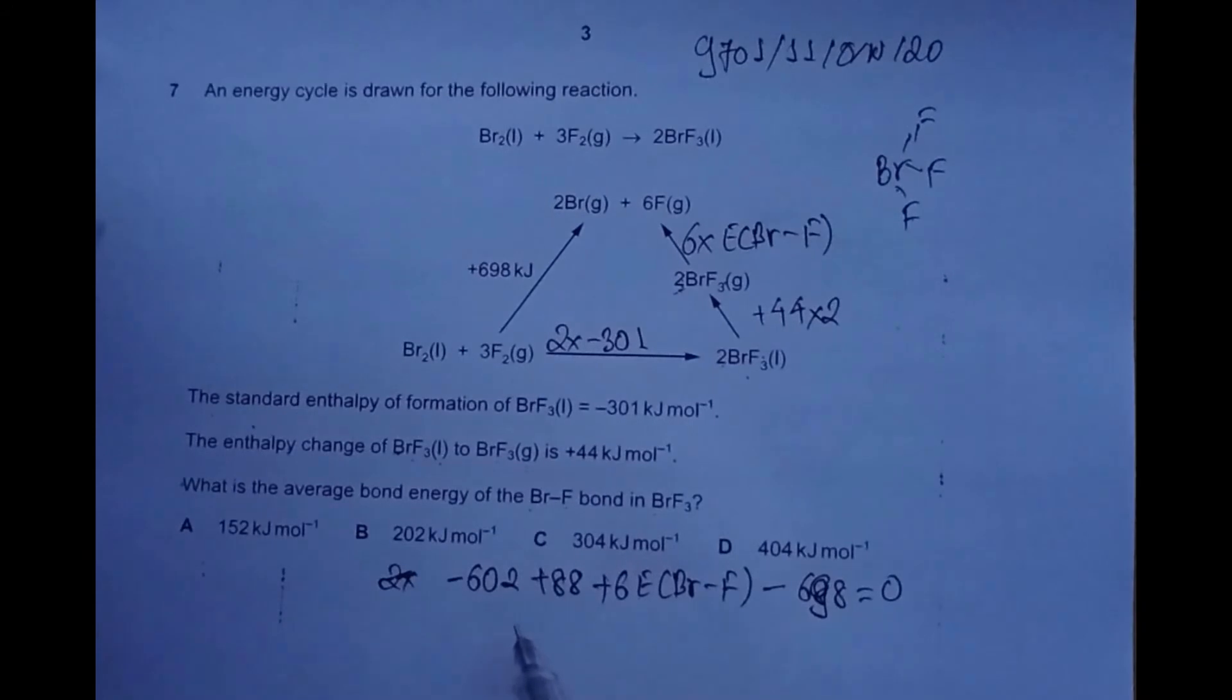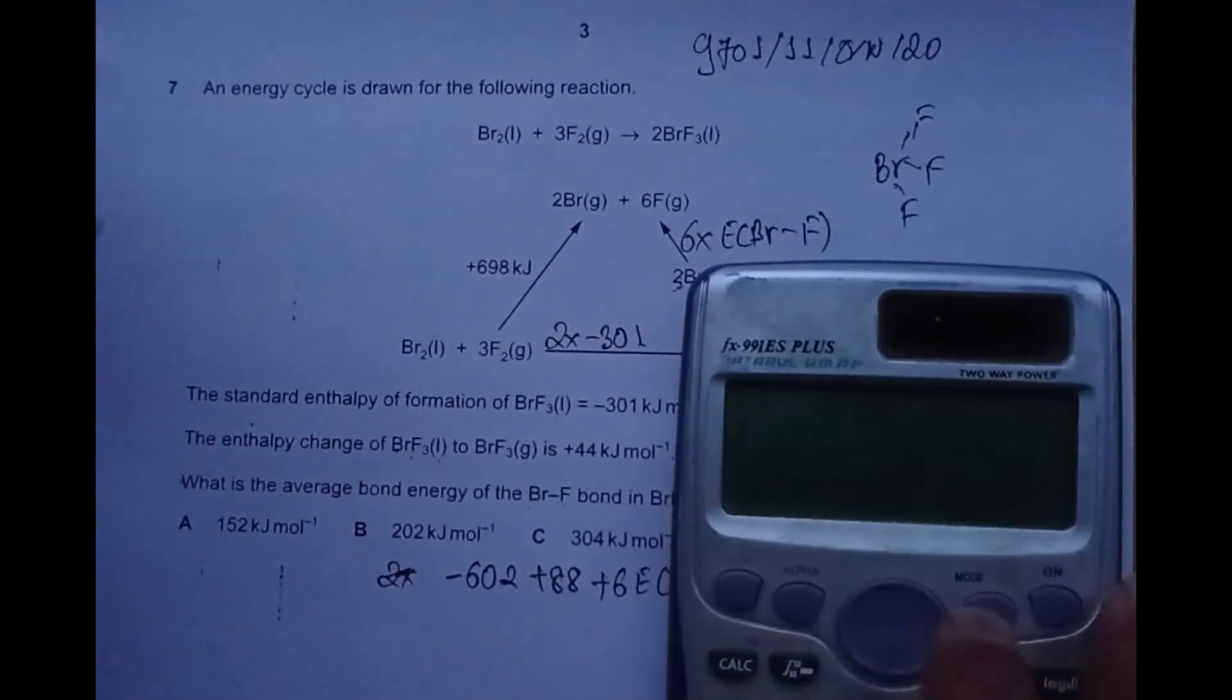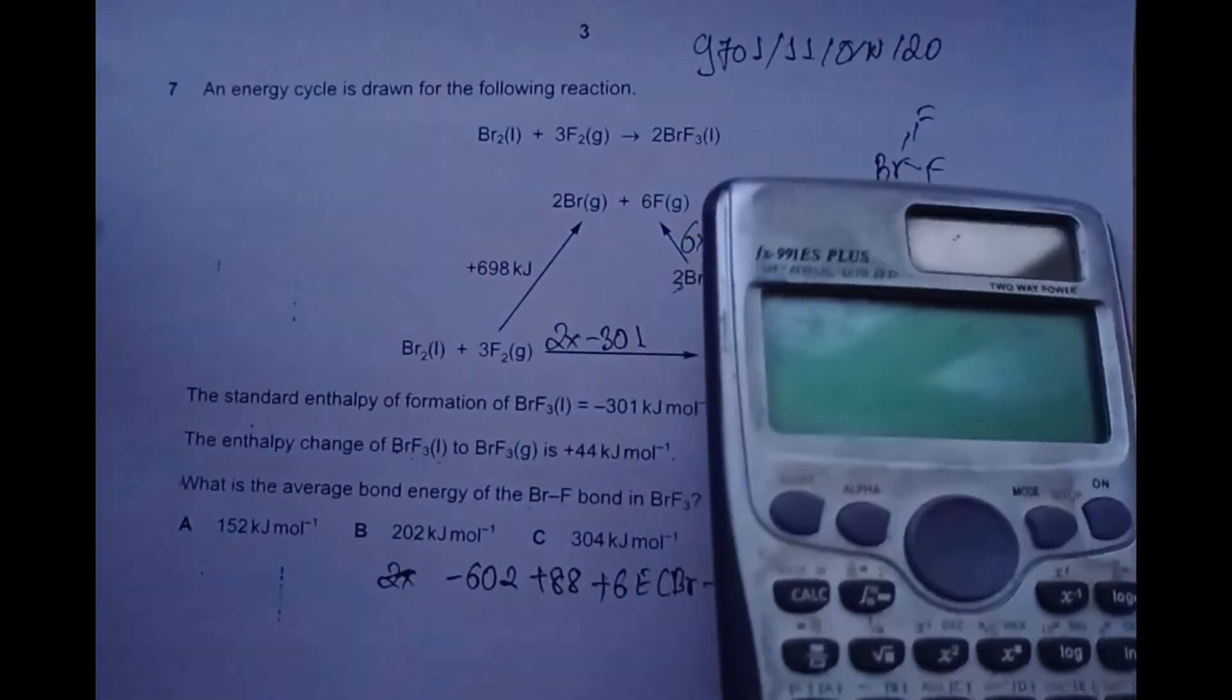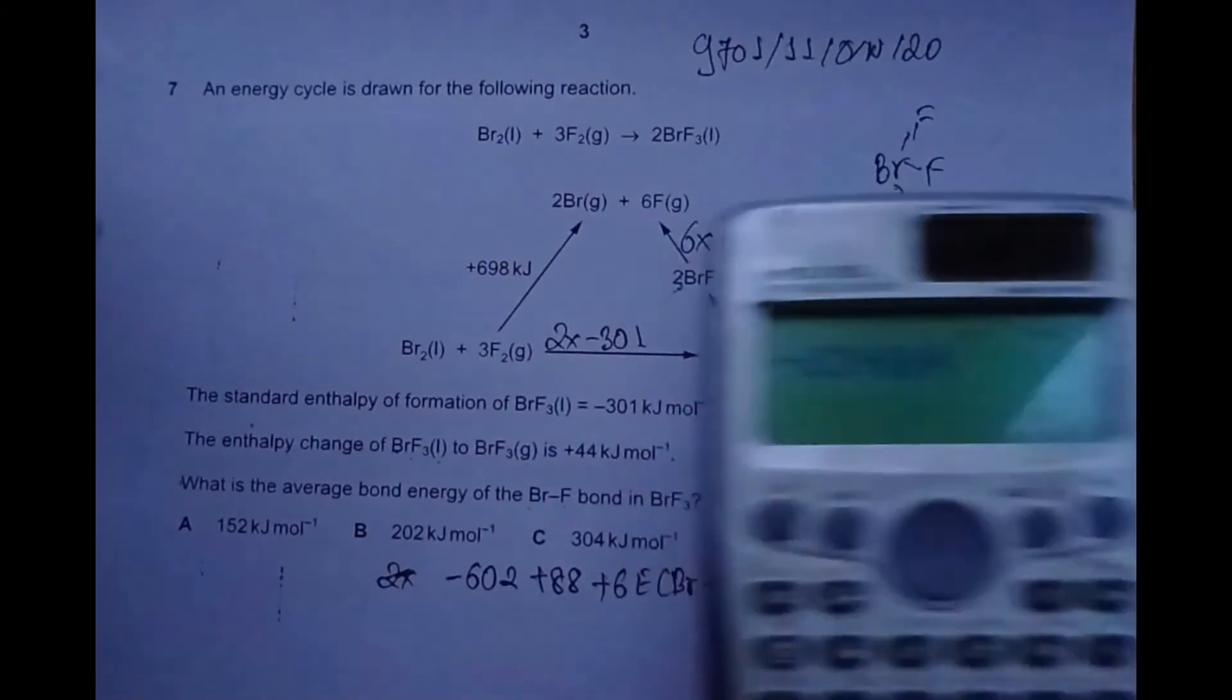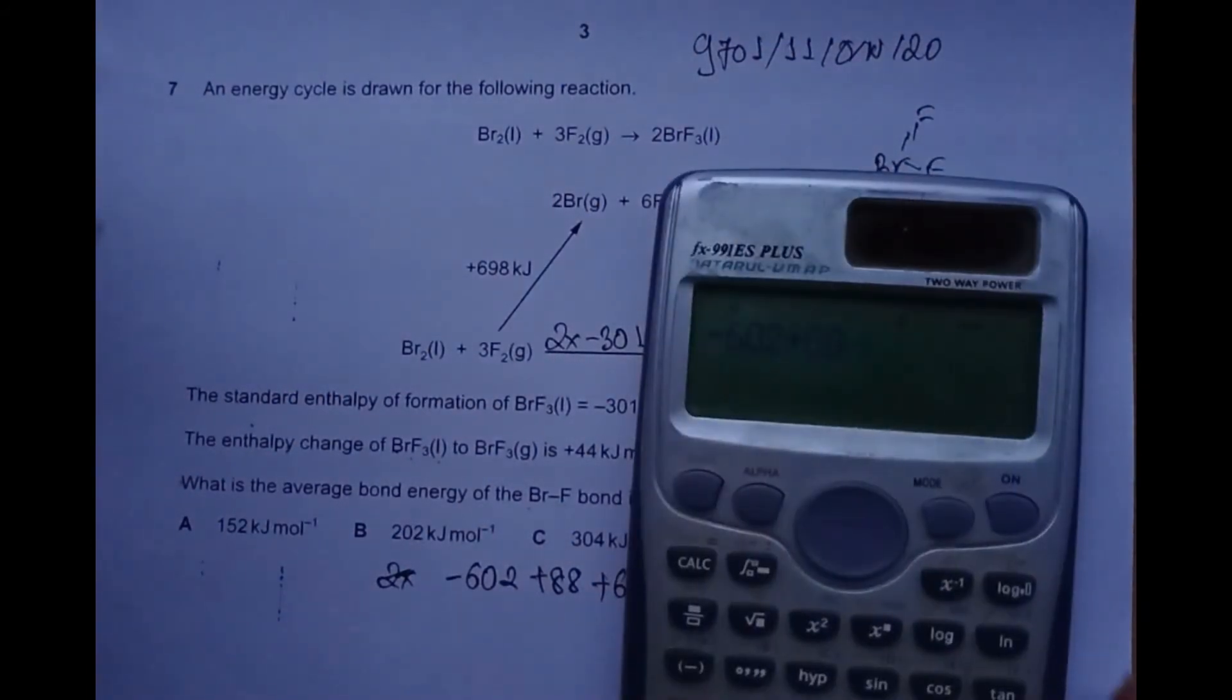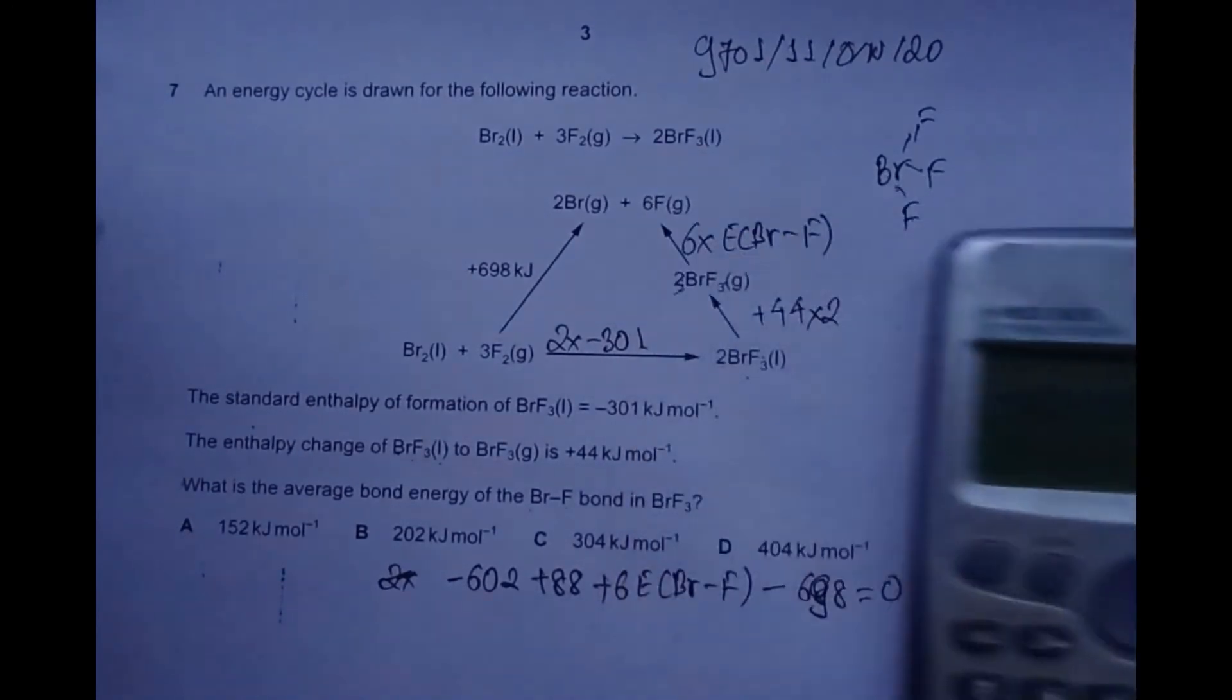Now we do the arithmetic using a calculator. Negative 602 plus 88 minus 698 gives us -1212.